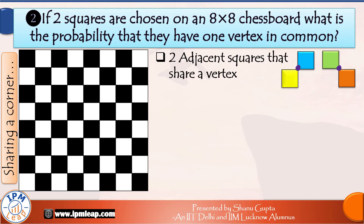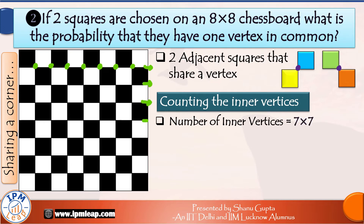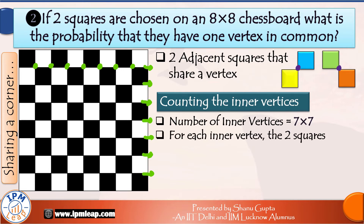Let's count how many inner vertices exist. There are 7 along each line and there are 7 such lines. So 7×7, that is 49 inner vertices.